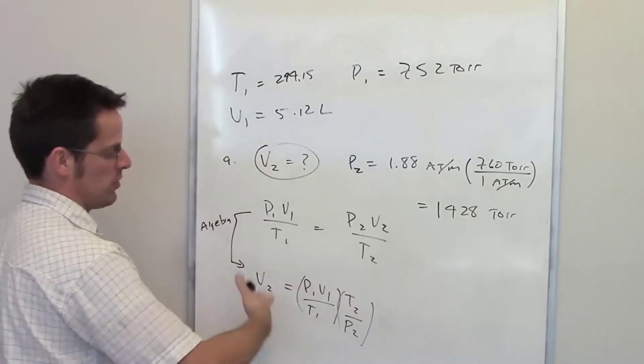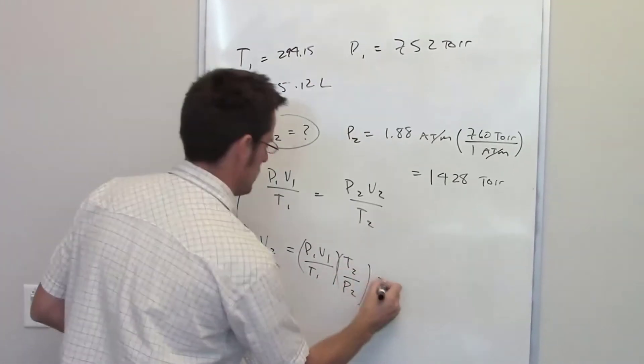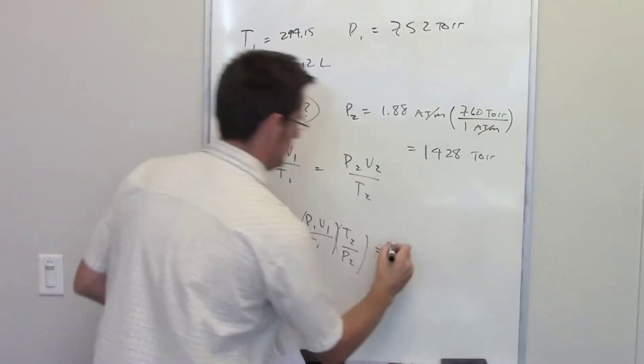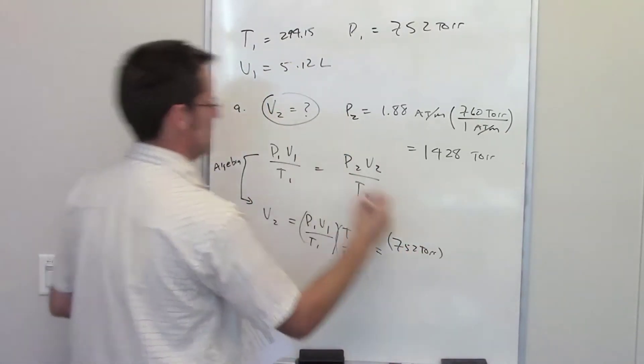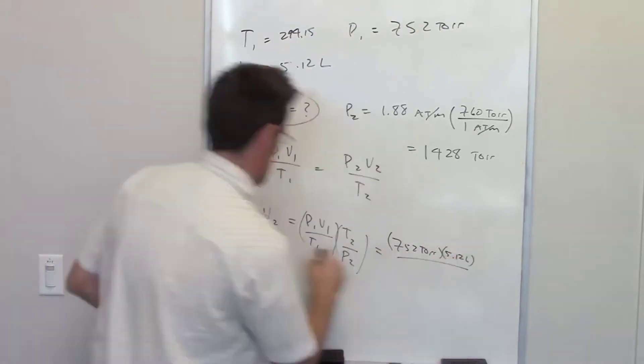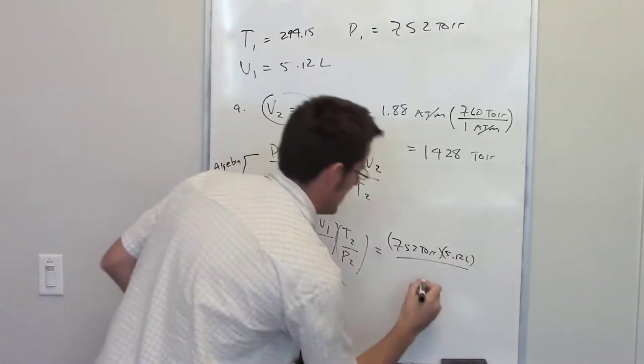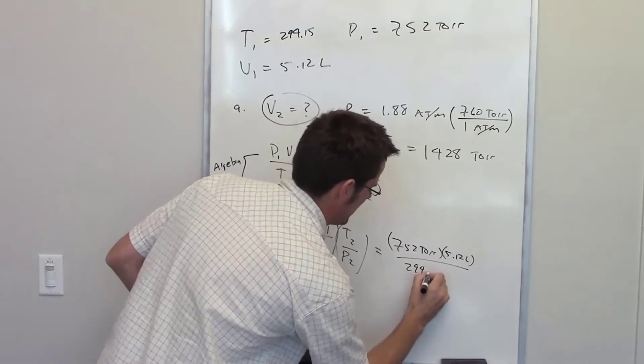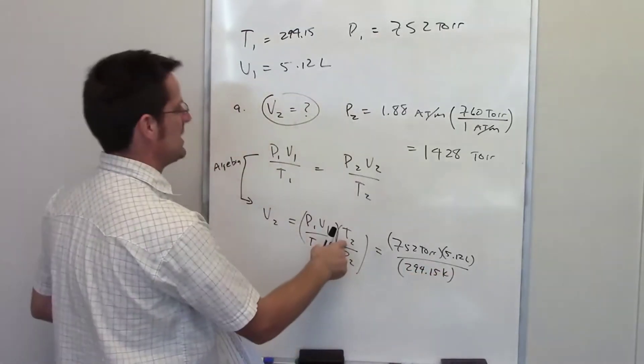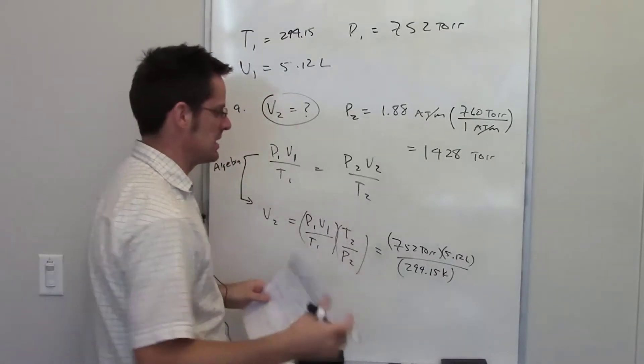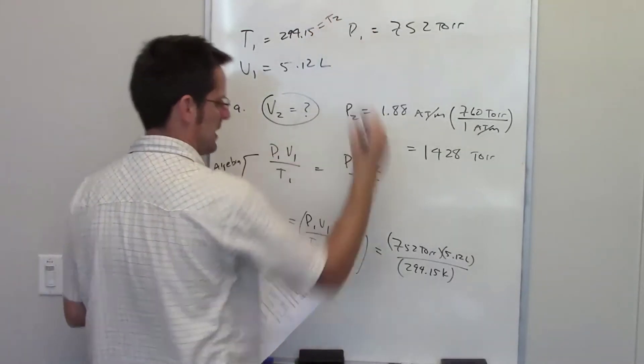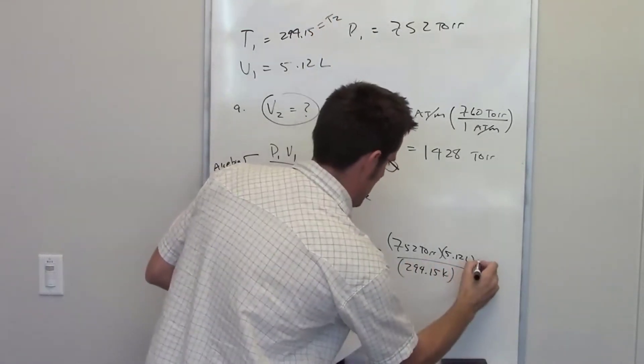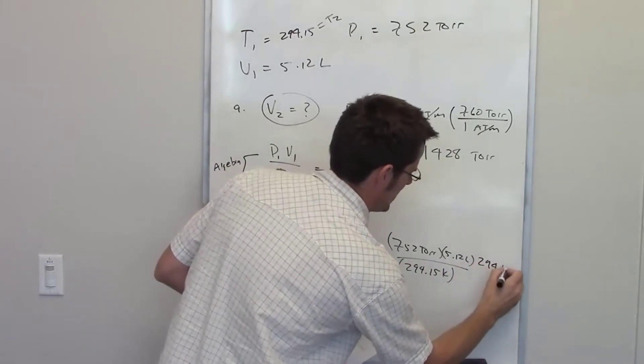Now for the remainder, all I have to do is throw in each of these values. So for P1, I've got 752 torr. For V1, I've got 5.12 liters. For T1, I've got 294.15 kelvins. Now for T2, the problem tells me that the temperature is held constant, so T2 and T1 are the same. So I can go ahead and write down T2 as being 294.15 kelvins.